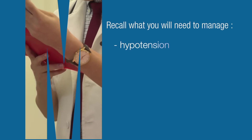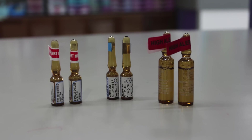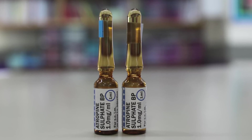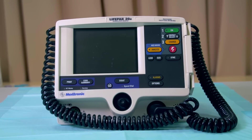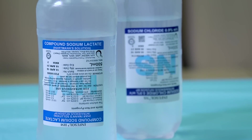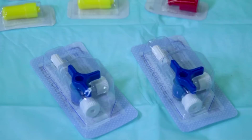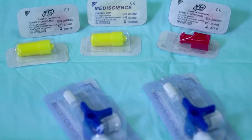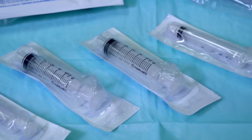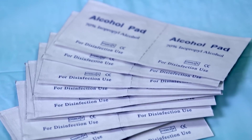Recall what you need to manage hypotension, arrhythmias, and cardiac arrest. You will require IV medications such as adrenaline, amiodarone, atropine, and lignocaine. A fully charged defibrillator, gel or defibrillator pads, IV fluids, IV infusion set, IV cannulae, 3-way stopcock, stoppers, tape or anchoring device for IV access, syringes, needles, water for injection, and alcohol swabs.